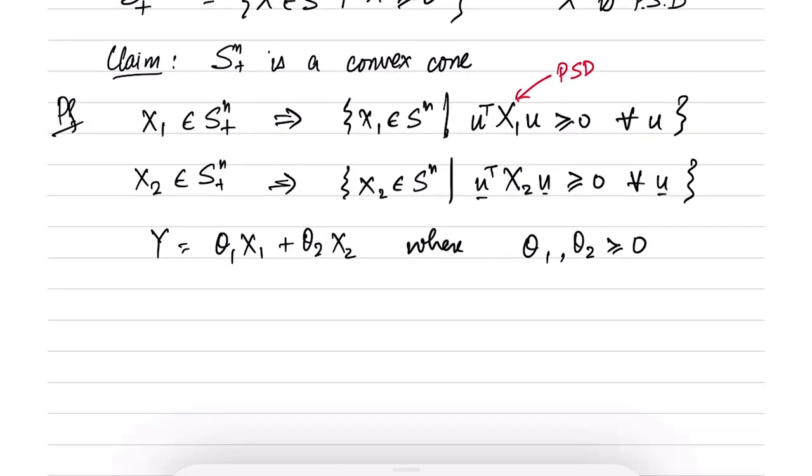So first of all, is Y symmetric? That is easy to verify. You just take Y transpose. So this will be equal to theta1 times X1 transpose. Remember theta here is a scalar. So theta1 times X1 transpose plus theta2 times X2 transpose.